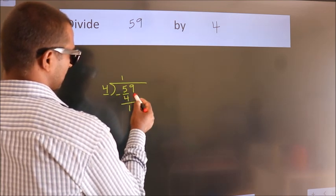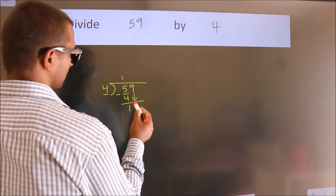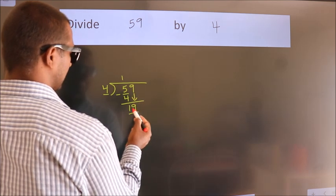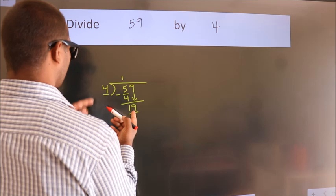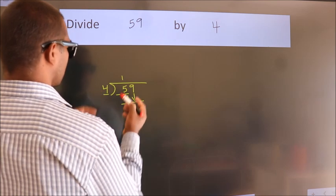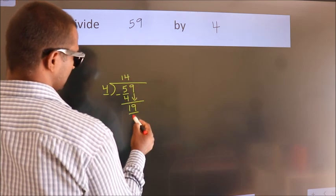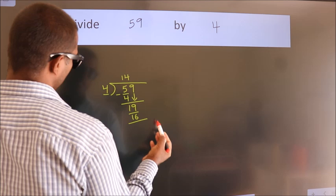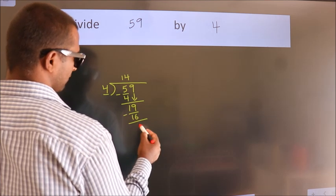After this, bring down the beside number. So 9 down, so 19. A number close to 19 in 4 table is 4 fours, 16. Now we subtract. We get 3.